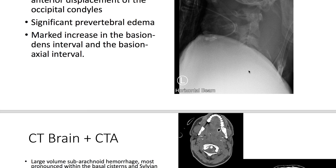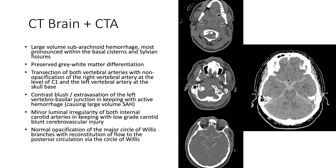The CT of the brain shows a large volume subarachnoid hemorrhage, most pronounced within the basal cisterns and the Sylvian fissures. The CTA shows transection of both vertebral arteries, with non-opacification of the right vertebral artery at the level of C1.